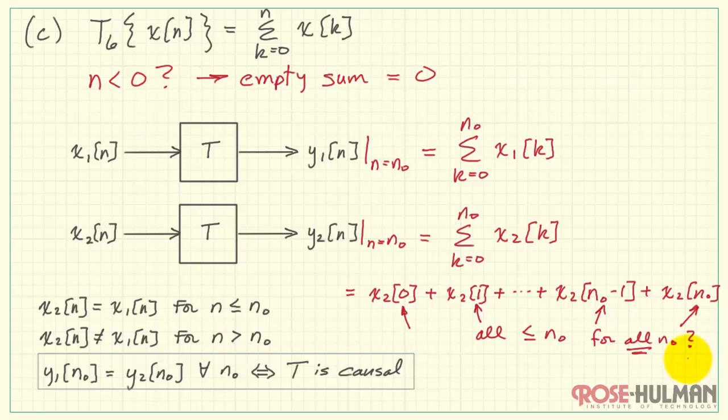Let's try looking at a specific case that might seem to cause some problems. I'm going to change n0 to the specific value of minus 2. If we go with the definition of the summation that this is x2 of minus 2 running up to x2 of 0, then it would seem like we have problems with forward references. If n0 is at minus 2, we're looking ahead in time. However, using the definition of this as being an empty sum, this case specifically would be equal to 0. Therefore, we have no forward references, and the two values y1 and y2 are in fact the same for all n0, and T6 is causal.